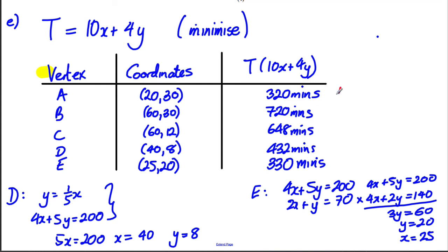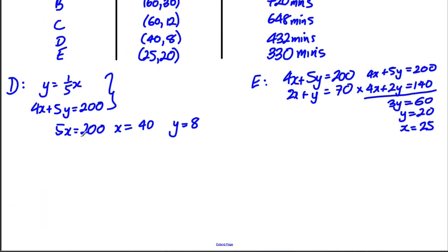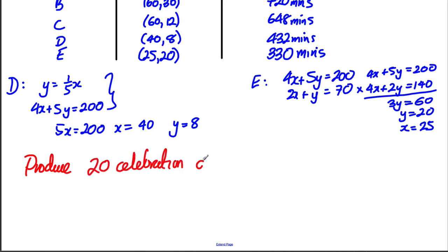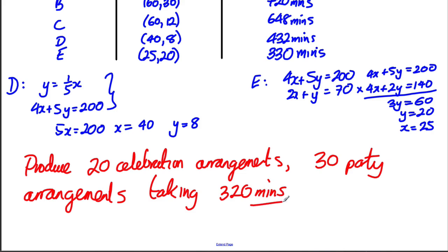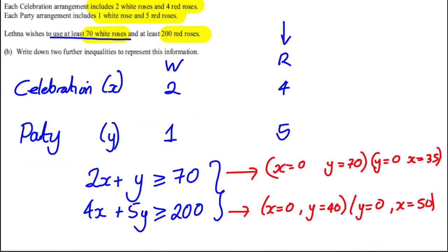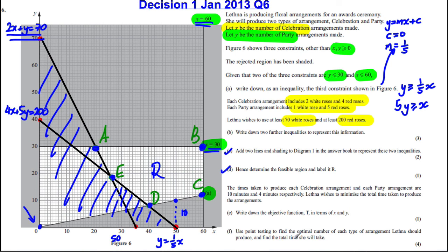Since we're minimizing, the minimum time is at vertex A with T = 320 minutes. Therefore she should produce 20 celebration arrangements and 30 party arrangements, taking 320 minutes total. Using the point testing method we tested all vertices and found the minimum, so the question is complete.